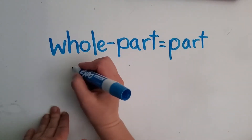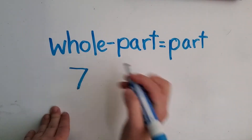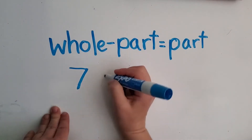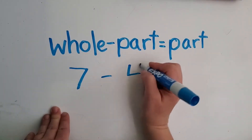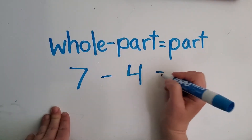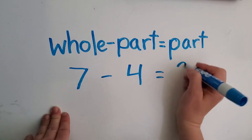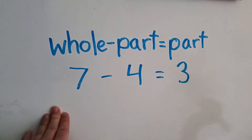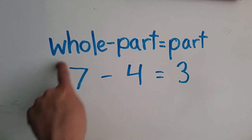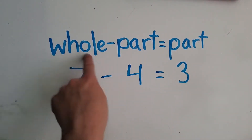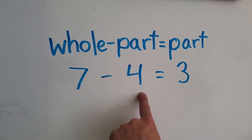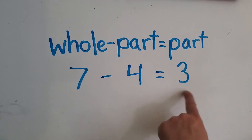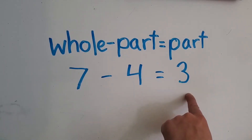So if we take this subtraction problem: seven minus four equals three. We start out with the whole — how many there are in all — which is seven. We take away part of it, which is four, and we are left with the other part, which is three.